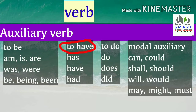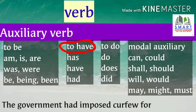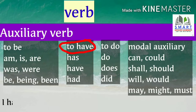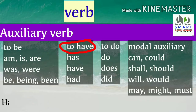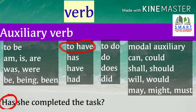Forms of to have — that is has, have, and had — are used to form sentences in perfect tense. For example: the government had imposed curfew for one week. Here, had is used to form past perfect tense. 'I have finished my work.' In this sentence, have is used to form present perfect tense. 'Has she completed the task?' Again, present perfect tense.